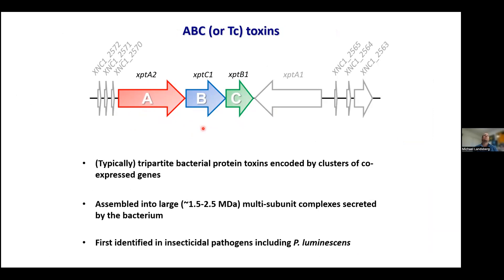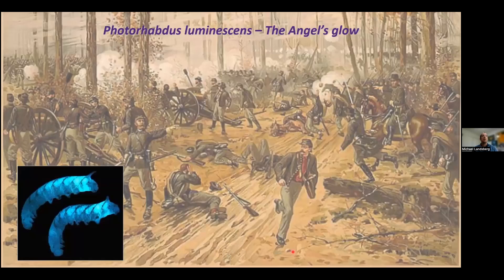When expressed, these toxins assemble into large multi-subunit complexes that are typically secreted by the bacterium. They were first identified in the insecticidal pathogen Photorhabdus luminescens. Before getting into the structural data, I want to talk a little bit about Photorhabdus luminescens because it's a very interesting bacterium.